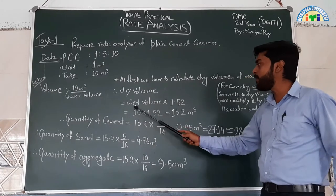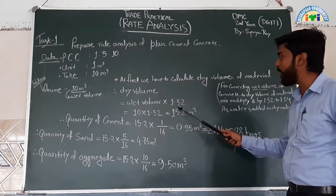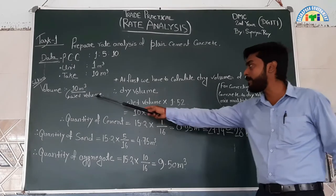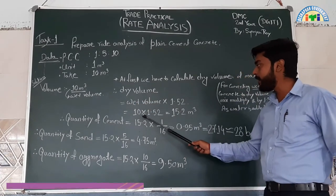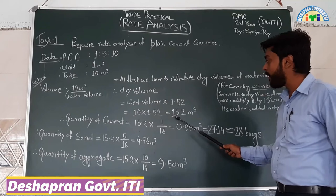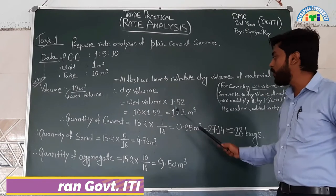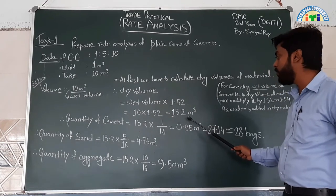Next, dry volume equals wet volume times 1.52. We calculate 10 cubic meters times 1.52. The total dry volume is 15.2 cubic meters.